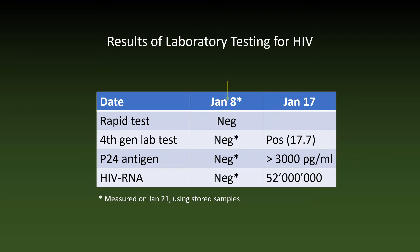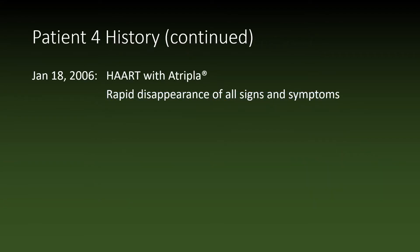Here are the results of laboratory testing for HIV. All tests were negative on January 8th, but on January 17th the fourth-generation lab test was positive. The P24 antigen was present at more than 3,000 picograms per ml, and the HIV RNA was astronomically elevated at more than 50 million copies per ml. The patient was treated with highly active antiretroviral therapy; antibiotics were discontinued and all signs and symptoms rapidly disappeared.